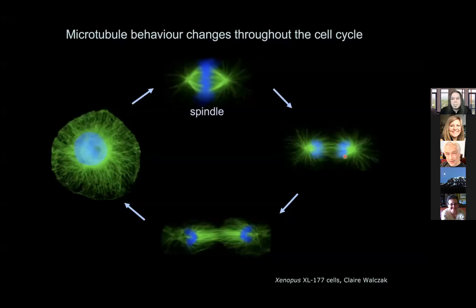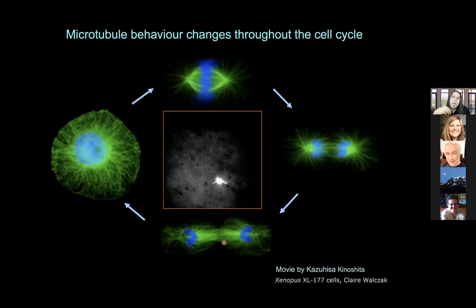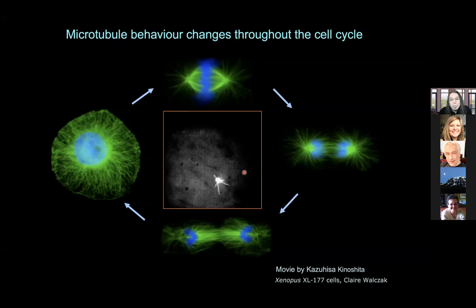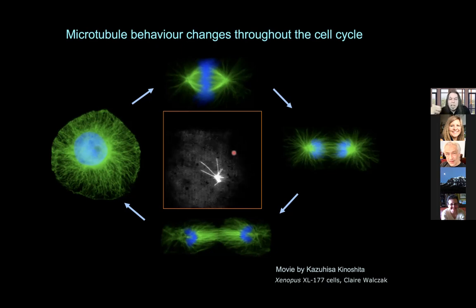In order to understand how these structures form throughout cell division, we have to understand how the polymer is regulated. I've spent many years trying to understand the regulation of microtubules, these cytoskeletal polymers. Microtubules are quite dynamic — they grow and shrink in the cell and contribute to the formation of these structures. The trick for the cell is to control this behavior in order to form these structures at the right time and in the right place.